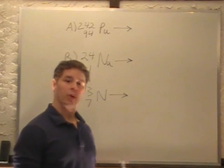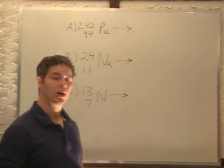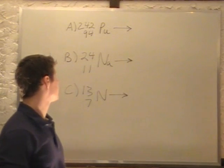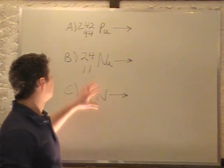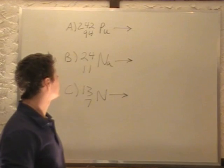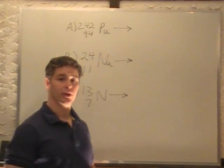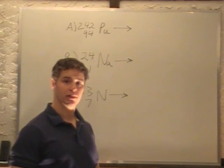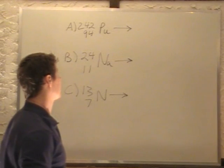In this problem, we're asked to determine what the final products are of certain types of radiation. So we have plutonium, 242/94 plutonium, that undergoes alpha decay, and we want to determine exactly what we have left.